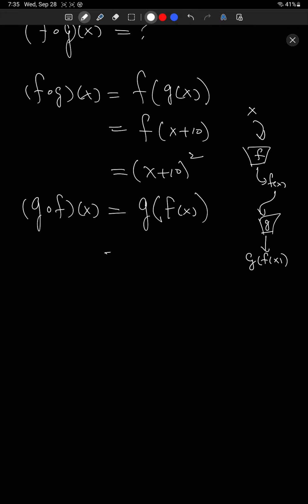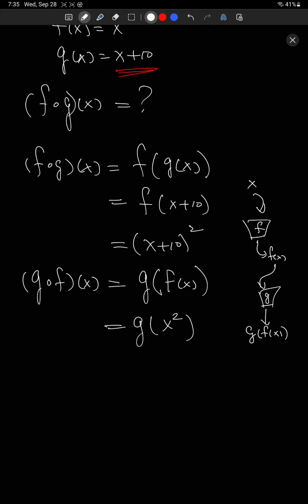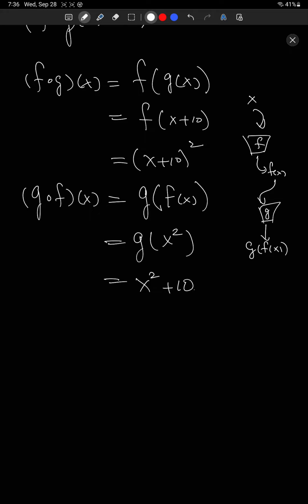The important thing here is that this is g of — what's f of x? f of x is x squared. So g of x squared. g is the thing that whatever you put in, you add 10 to it. So I'm putting in x squared and I need to add 10: x squared plus 10. It's really, really important to note that they're not the same — they're actually very, very different. So in general, f after g and g after f are very different functions; the order matters a great deal.